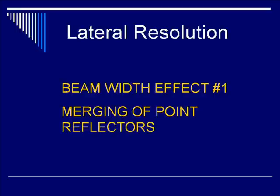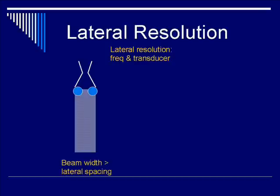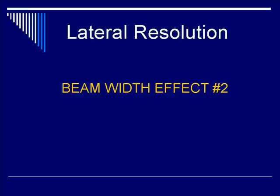Let's talk about beam width effect number one. Obviously, if you do not meet the lateral resolution criteria, there will be merging of point reflectors. For example, with two point reflectors where the spacing is less than the beam width — or, looking at it the other way, beam width is greater than lateral spacing — the two objects will merge into a line. Beam effect number one: point objects that cannot be resolved laterally will become a line.